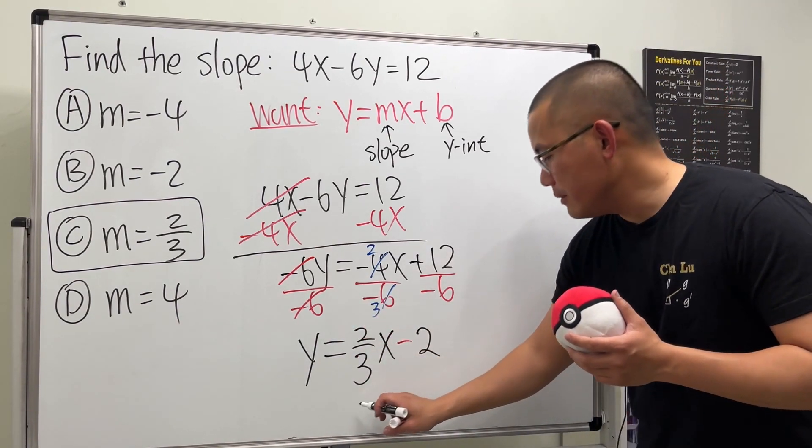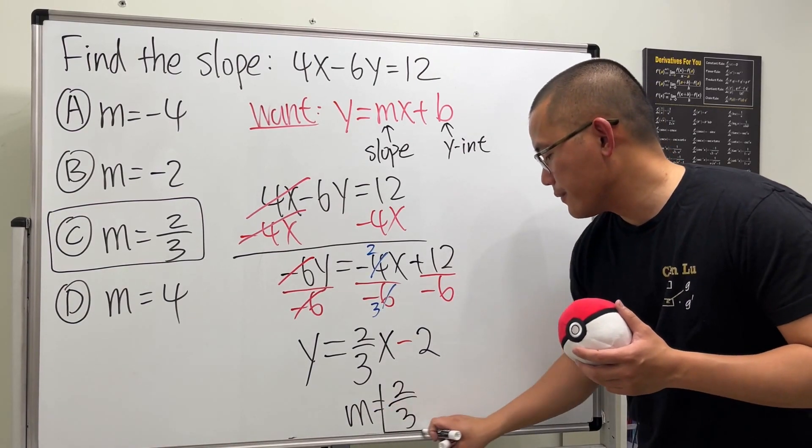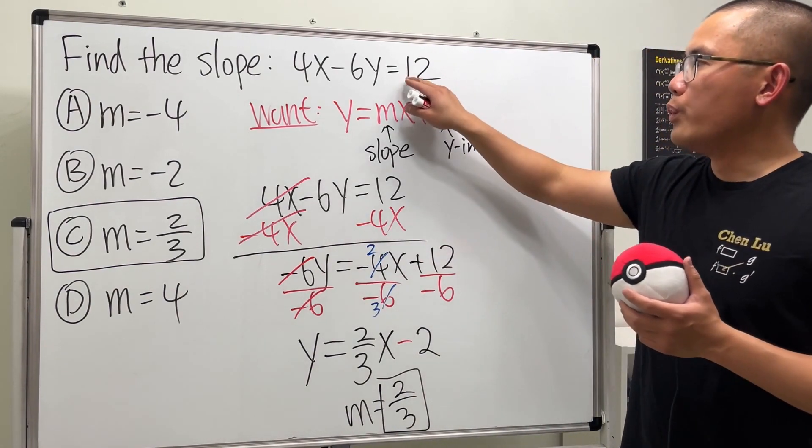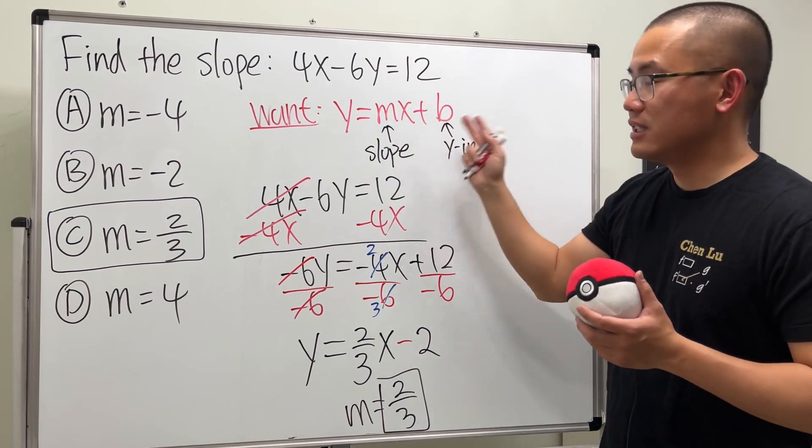This is the answer: m is equal to 2 over 3. Yeah, just like what we got over there. So this is how you find the slope of a line when we have the equation in the standard form. Just go ahead and put it in the slope intercept form.